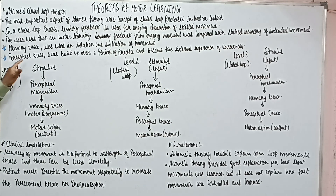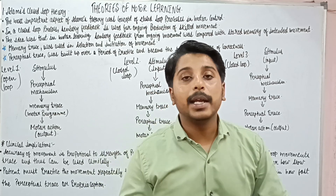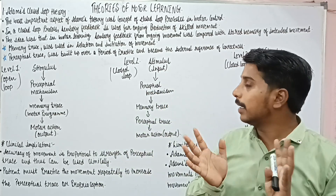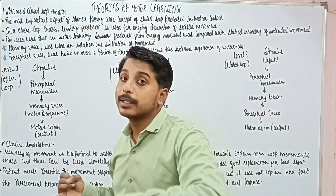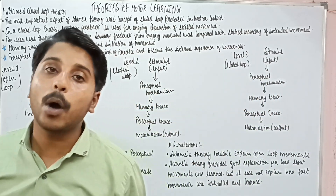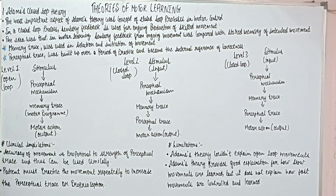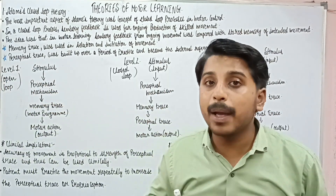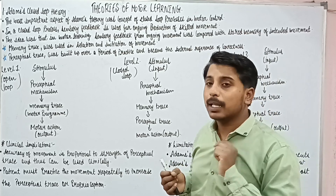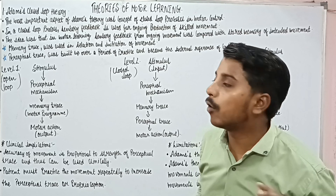You need to understand two more terms: first is memory trace, while second is perceptual trace. Memory trace has two significant functions: first, to select which type of movement is required, and second, to initiate that movement. So the memory trace is the stored memory that tells you which particular type of movement is required and then initiates it for you.